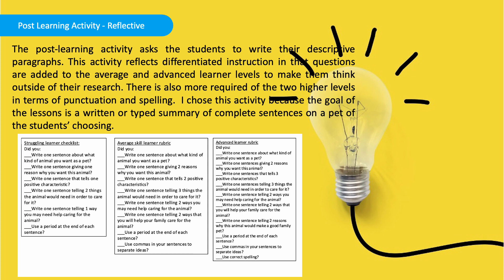The post-learning activity, also known as the reflective stage, asks students to write their descriptive paragraphs. This activity reflects differentiated instruction in that questions are added to the average and advanced learner levels to push them outside of their research. More is also required of the two higher levels in terms of punctuation and spelling. I chose this activity because the goal of the lessons is a written or typed summary of complete sentences about a pet of the student's choosing.